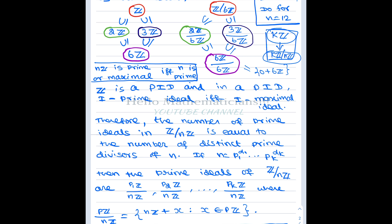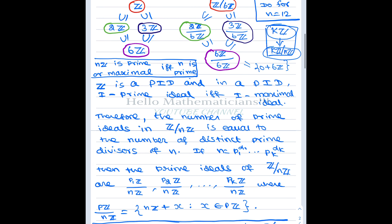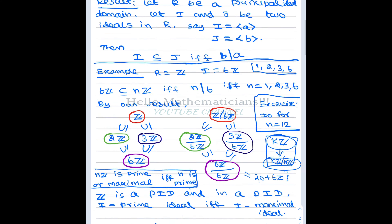The prime ideals of Z mod nZ are p₁Z/nZ, p₂Z/nZ, …, pₖZ/nZ. Also, the number of ideals in Z mod nZ equals the number of divisors of n, and the number of prime ideals equals the number of distinct prime divisors of n. So counting ideals is equivalent to counting divisors, and counting prime ideals is equivalent to counting prime divisors.